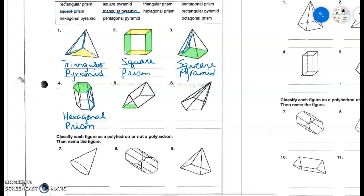Here, I have, notice, the rectangles are not parallel, the triangles are, so this is a triangular prism.